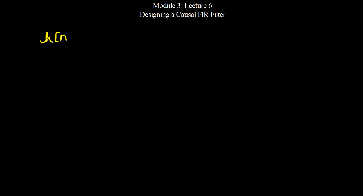Hello everyone, welcome to another lecture of the course Digital Signal Processing. In the previous lectures we have seen how to design a FIR low-pass filter using the windowing technique. For that, what we had done was we considered H of n — the desired low-pass filter obtained from the ideal low-pass filter multiplied by a window function W of n.